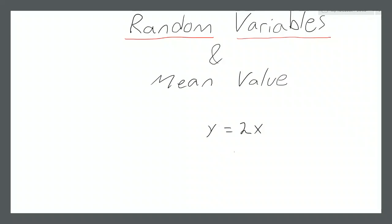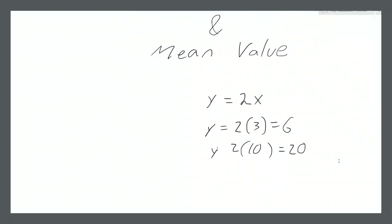Specifically, y is twice as big as x. So if x is 3, then y is going to be 2 times 3 — y is going to be 6. If x is 10, then y is going to be 20 and so on. And this is usually what people think when they hear variable — they think an unknown in an equation.